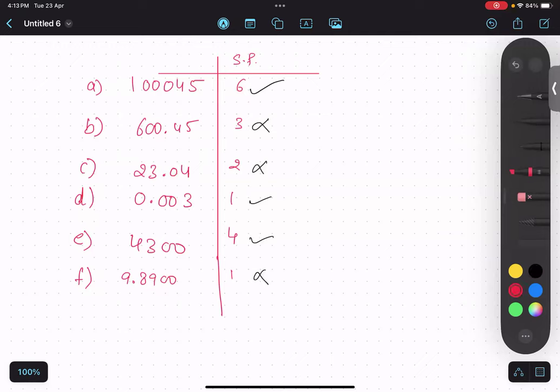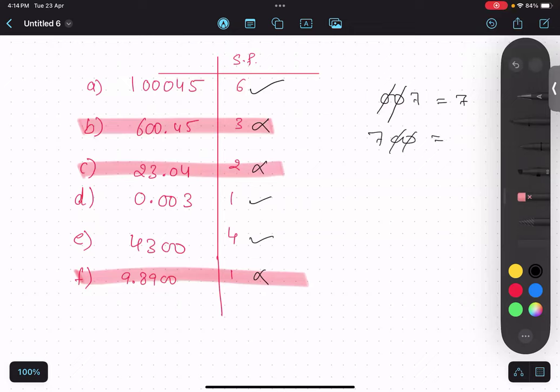Now, which the ones which are incorrect, let us focus on them. Try to understand. Significant figures means like if we do not include them, the number will change. For example, 007. If I do not include them, it doesn't matter. It is still seven. Whereas if I take 700 and if I cancel zeros of this, zeros matters over here. Over here, zeros does not matter.